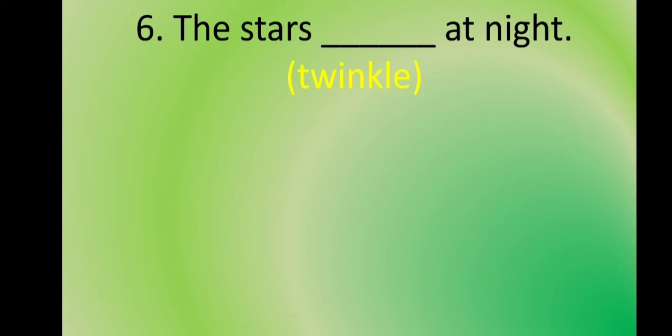The next statement is: The stars ___ at night. The verb is 'twinkle.' The subject is 'the stars,' which is a plural subject, so we use the first form of the verb. The answer is: The stars twinkle at night.